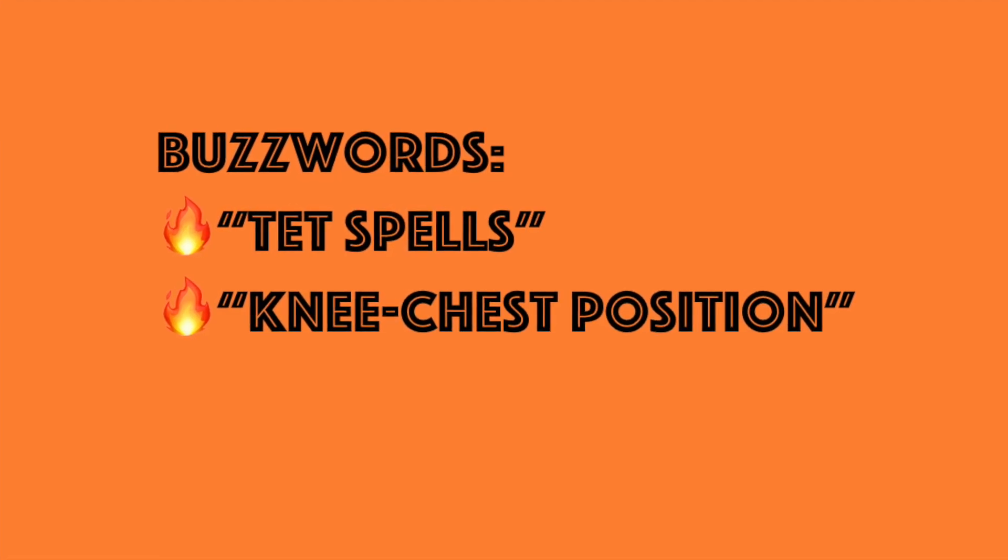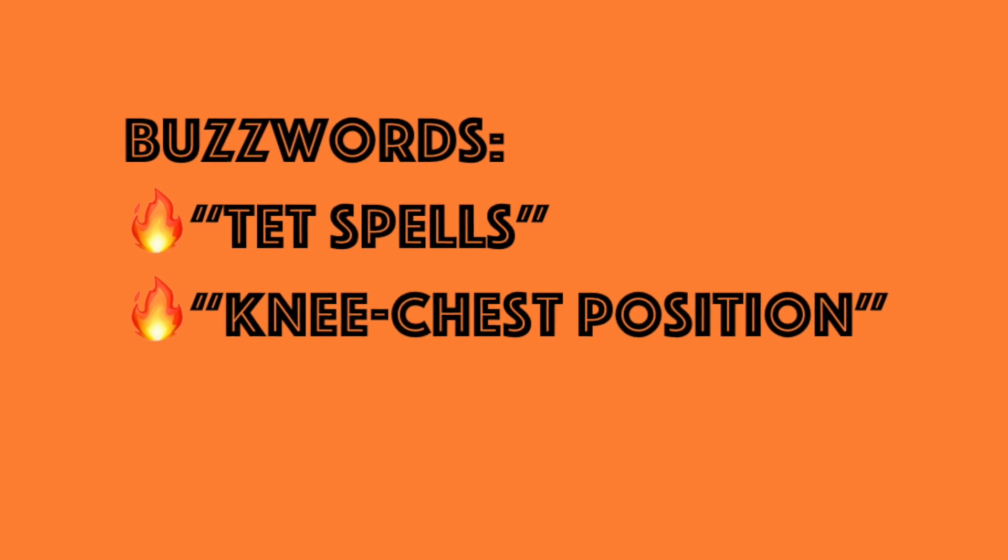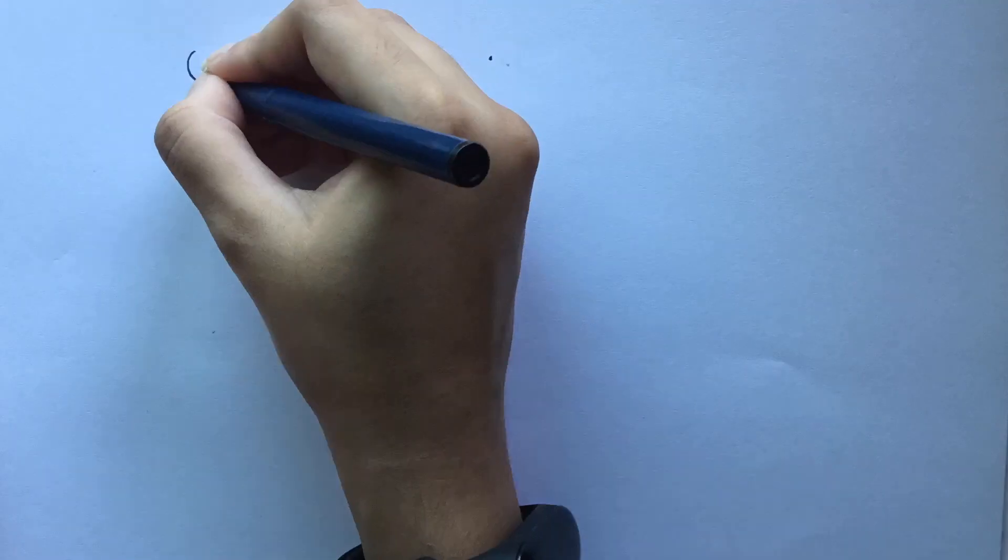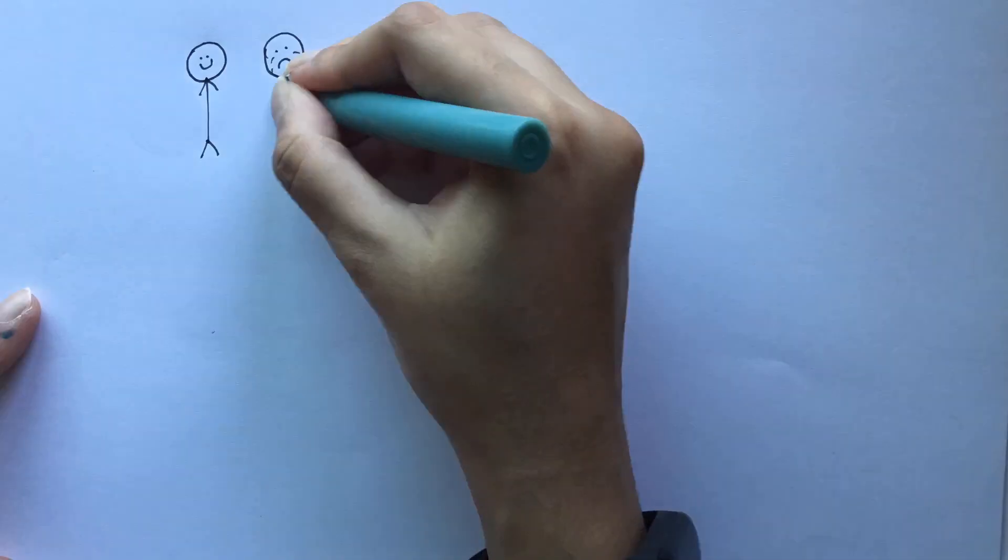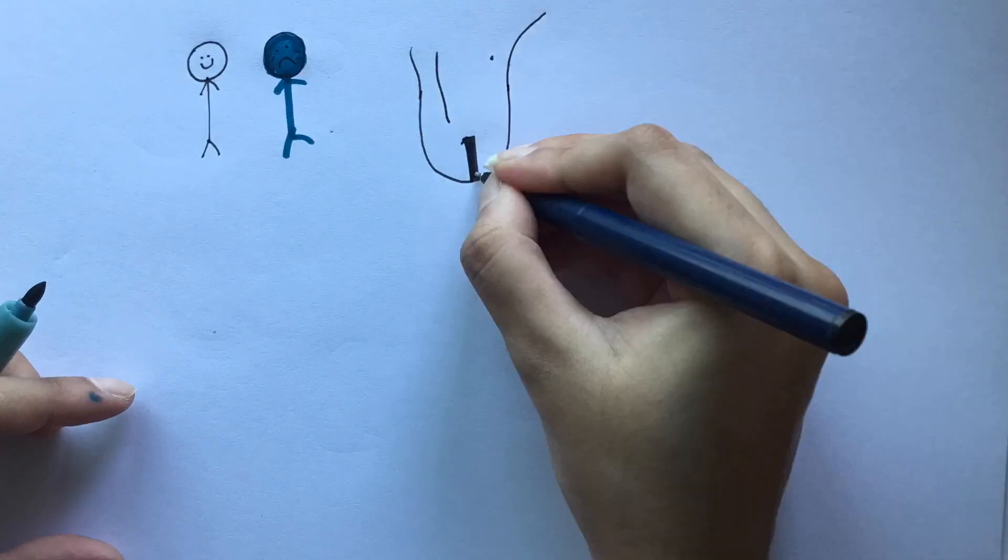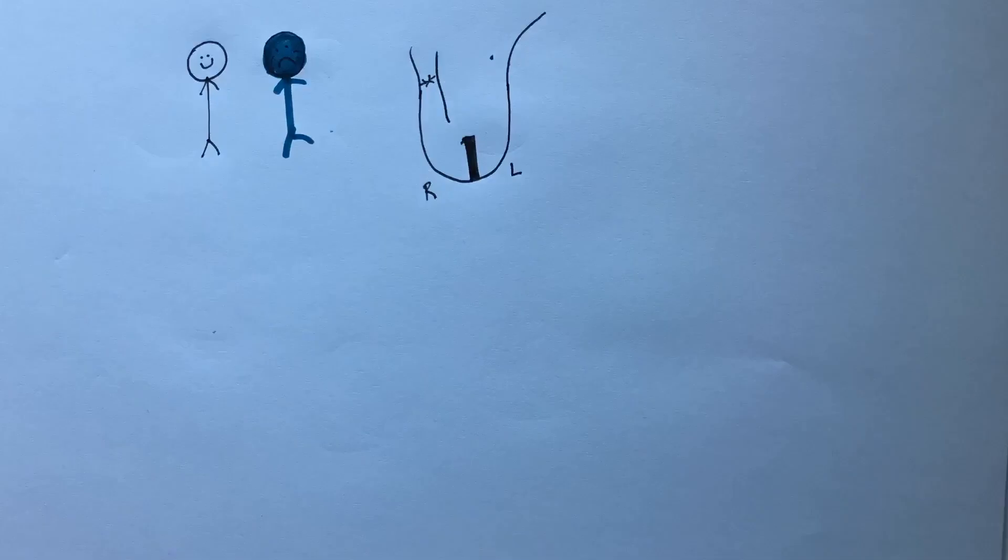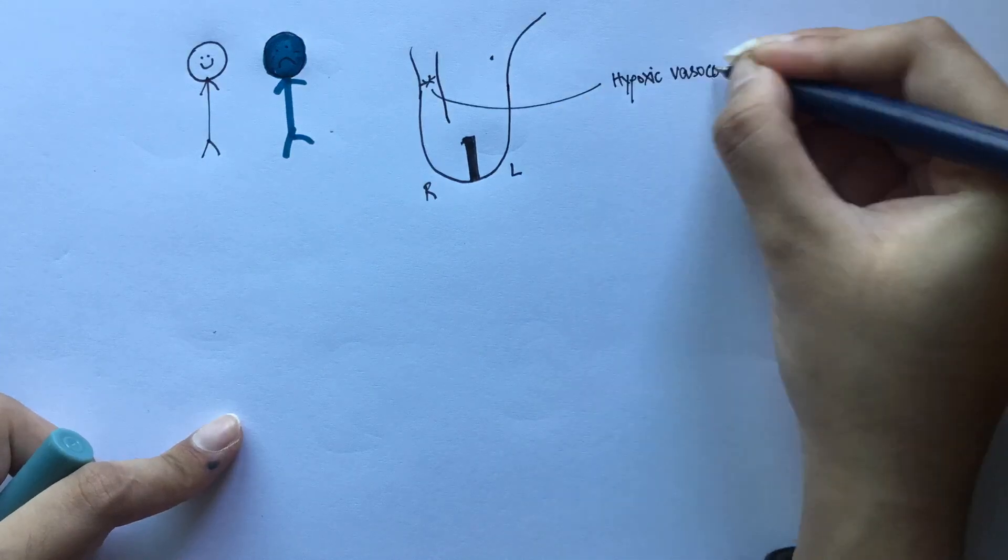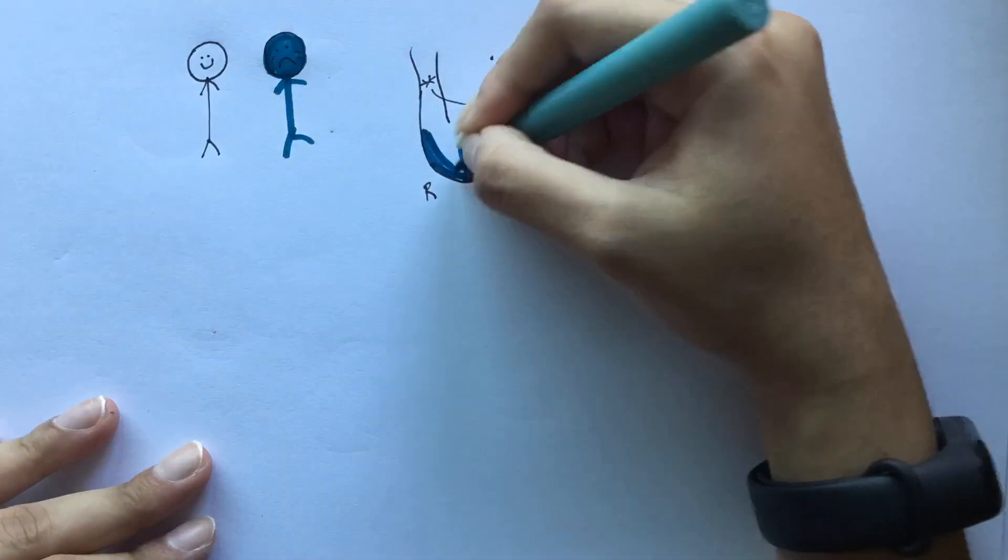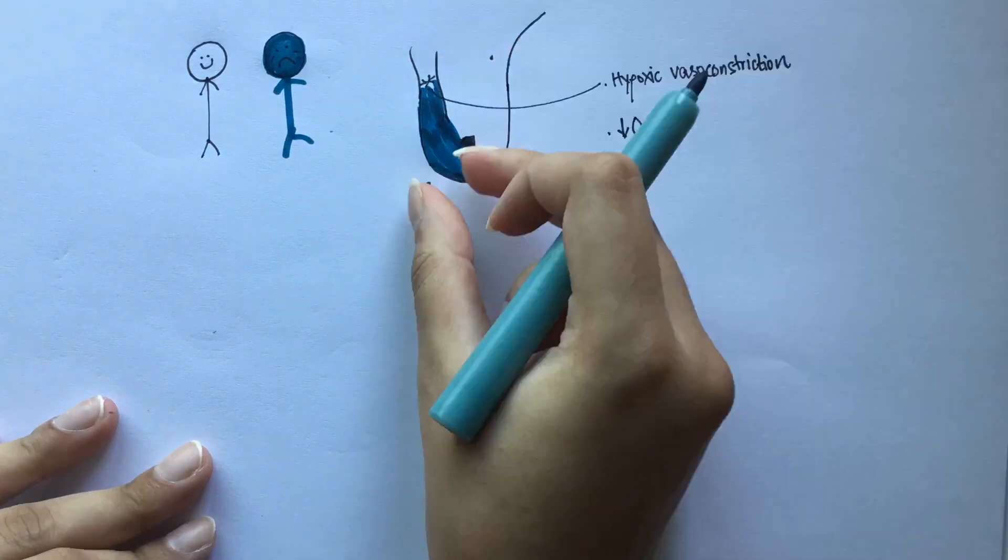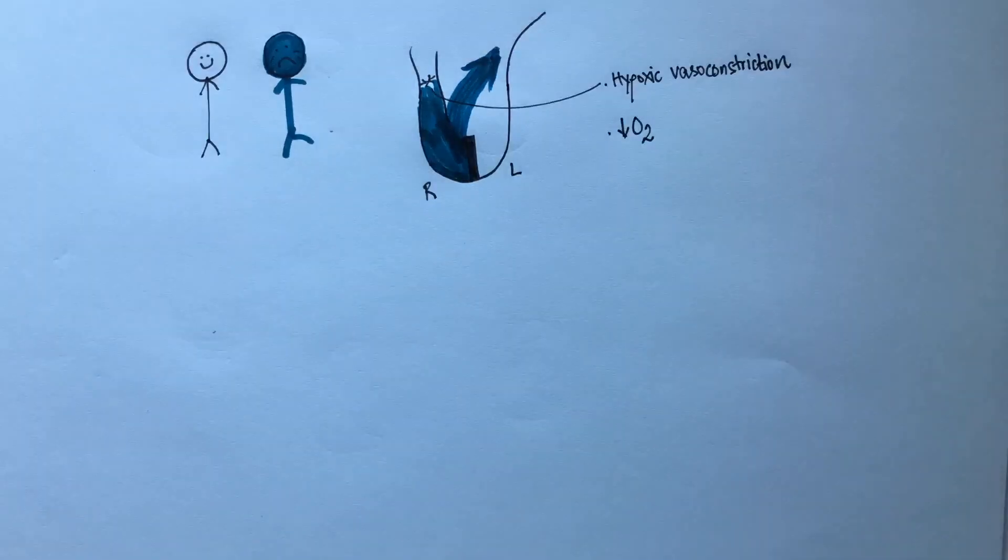There are two unique clinical features of the tetralogy of Fallot. Patients with tetralogy of Fallot experience something known as a death spell. This is basically an episode of cyanosis which is triggered by crying or exercising. The physiology behind this is that when the patient cries or exercises, there is low oxygen in the body. Hypoxia triggers vasoconstriction in the pulmonary arteries. Since the resistance here is high and there is low oxygen in the body, there is a large amount of deoxygenated blood flowing through the ventricular septal defect into the aorta.